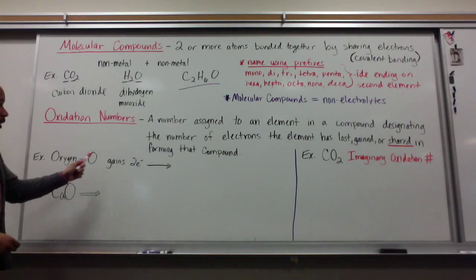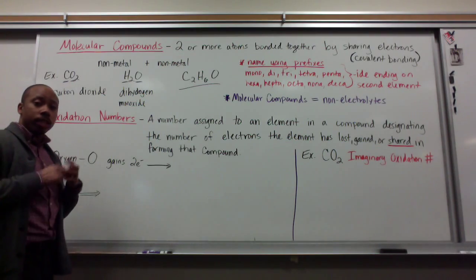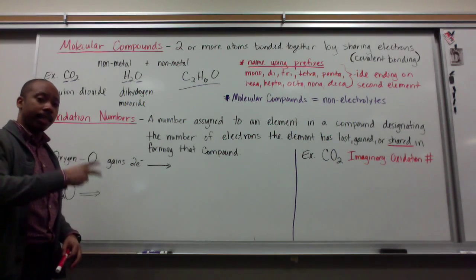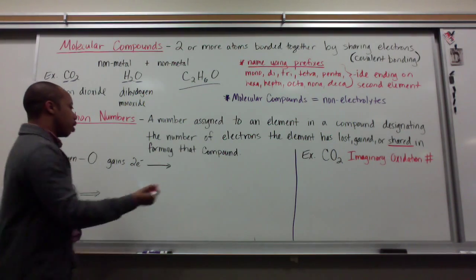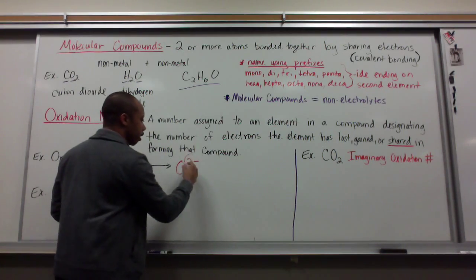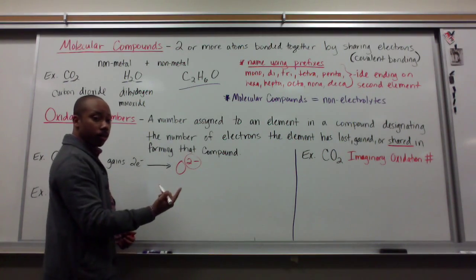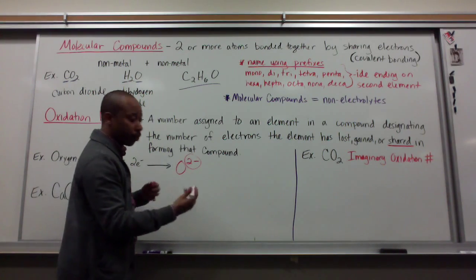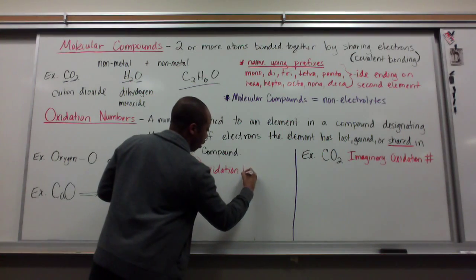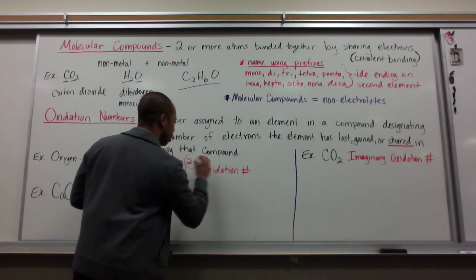Oxygen, element O. When it goes to achieve an octet, it's going to gain two electrons. It has six valence electrons. It's going to gain two to achieve an octet. When it does so, it becomes O two minus. Its oxidation number is two minus.